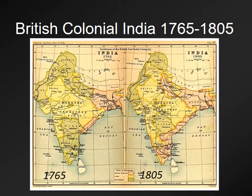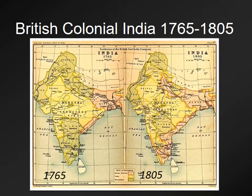In British India, what you have is not actually a British colony — it's a colony of the British East India Company, which is a private corporation centered in England. They don't control tons of area initially, but by 1805 they begin to gain more territory. Their territory is shown in pink. The British East India Company has the power to tax, the power to raise armies, and almost governmental powers, yet it operates for profit like a regular company.